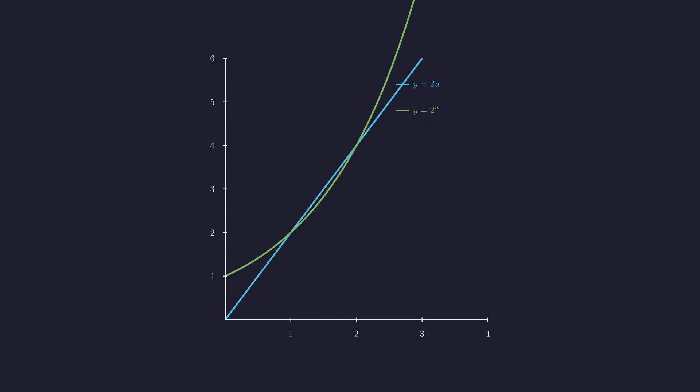Let's verify these solutions graphically by plotting both sides of the equation. Plotting 2u and 2 to the power of u, the graphs intersect at exactly two points. The graph confirms our Lambert W function results: u equals 1 and u equals 2.